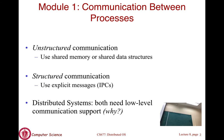You could also write data to a file; one process writes it and another reads it—that's also a form of unstructured communication, using shared data or shared files to pass information between processes. The other form is called structured communication, which involves passing network messages explicitly: you construct a message and send it to another process, whether on the same or a different machine. Much of what we'll discuss will involve structured, message-passing communication.